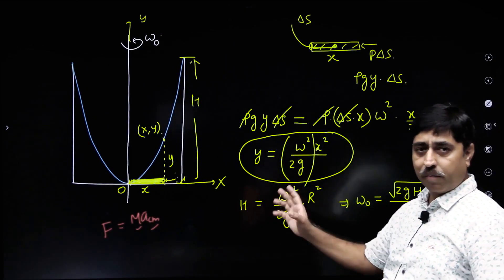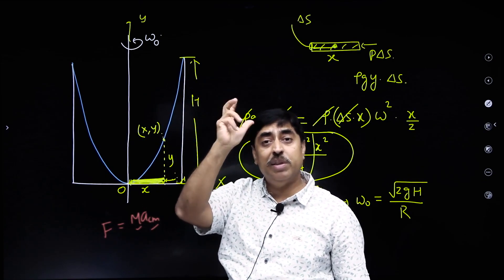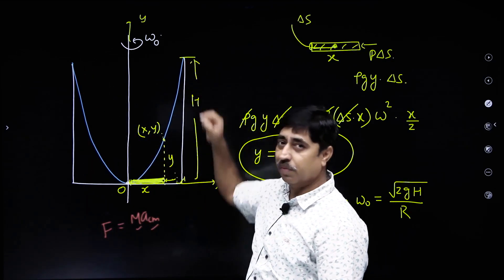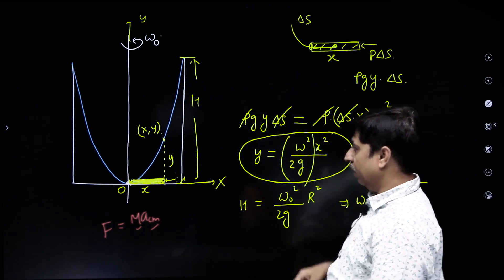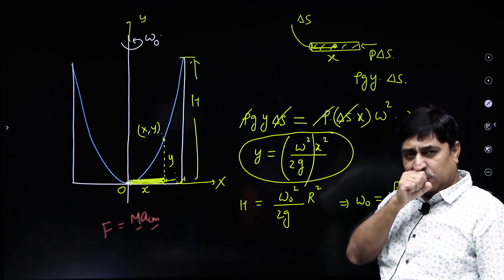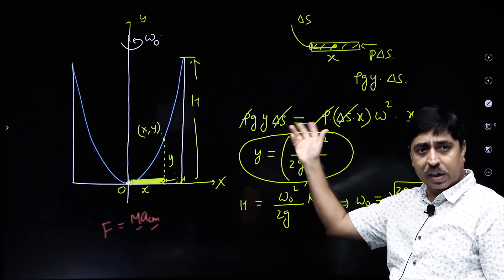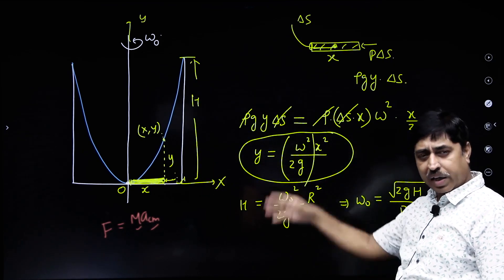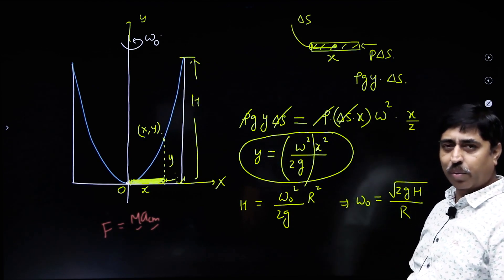If the cylinder is rotated with an angular speed such that the central bottom point just gets exposed, the shape of the liquid surface is a parabola. Taking the bottom centre as origin, x as radial axis and y as vertical axis, the equation of the surface is y = (omega²/(2g))·x². When y = h and x = r, you can calculate omega naught.